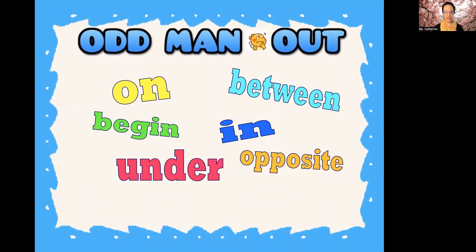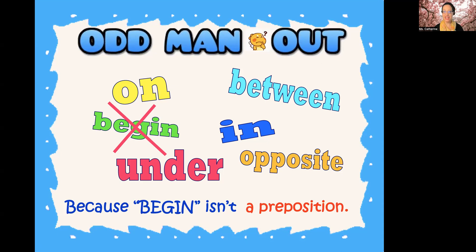Which one is the odd man out here? We have: on, begin, under, between, in, and opposite. Put it on pause — you might have to study this one a little bit. Which one does not belong? Begin. Do you know why? Because begin isn't a preposition. If this was a tough one, you should go back and look at one of my lessons on prepositions, or you can ask questions in the comments.